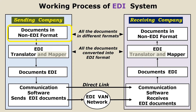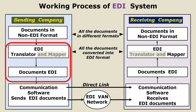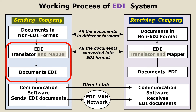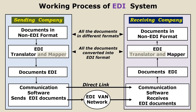First and foremost, the sending company has business documents in non-EDI format. All such non-EDI format documents are translated — that is, they are converted into standard EDI format using an EDI translator. Then communication software is used to send the EDI documents. So standard EDI documents are ready with the sending company, and then the sending company sends the business documents using communication software.